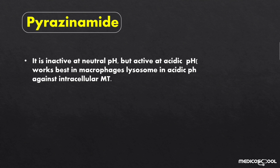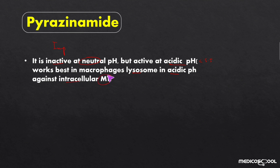Important points regarding pyrazinamide: it is inactive at neutral pH but most active at acidic pH, i.e. at pH less than 5.5. Thus it works best in the macrophage lysosomes, where there is acidic pH, against intracellular Mycobacterium tuberculosis.